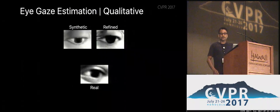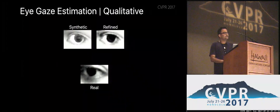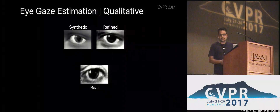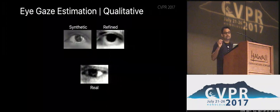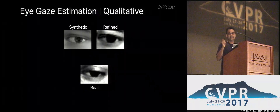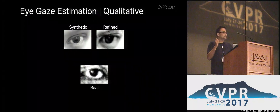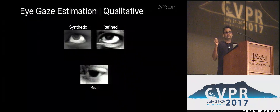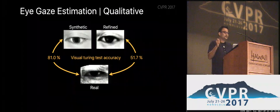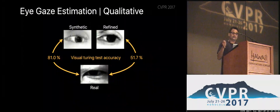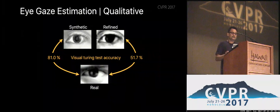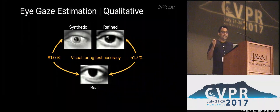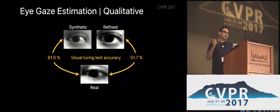At the top, I'm showing pairs of synthetic and corresponding refined images using our framework, and at the bottom, randomly sampled real images. The noise distribution in the refined images has been learned pretty well from the real images. It's easy to tell synthetic from refined since synthetic images look very smooth, but when comparing refined and real images, it's a much harder task — the noise looks nearly the same. We conducted a visual Turing test with ten subjects: 81% accuracy for synthetic vs. real, and only 51% — essentially chance — for refined vs. real.